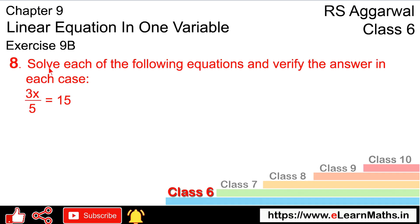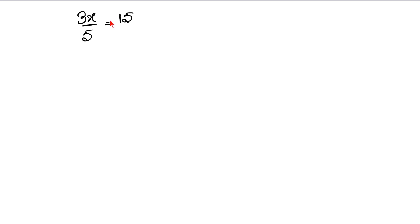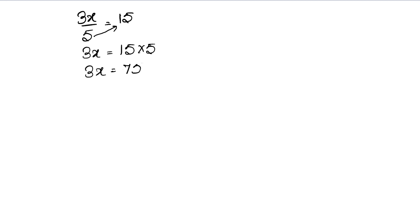Now let's do question number 8. Question number 8 is: solve each of the following equations and verify the answer in each case. We have to solve this again. The equation is 3x upon 5 equals to 15. We write our equation: 3x upon 5 equals to 15. The divide on the left side is multiplied to the right hand side. So this 5 divides here and multiplies there. We can write: 3x equals to 15 times 5, which is 75.